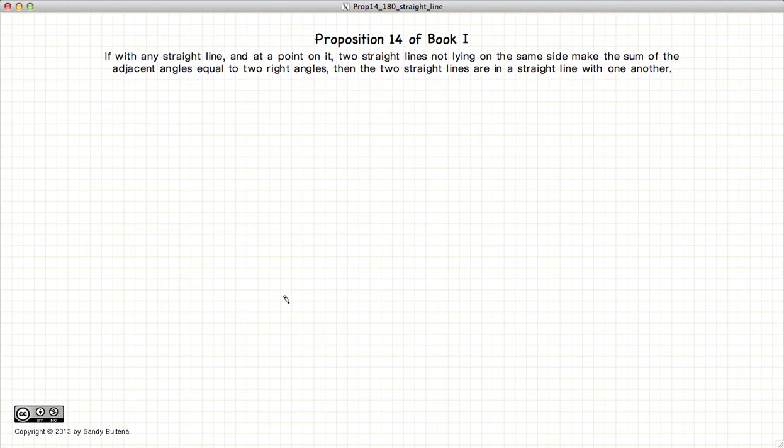which basically states that if you have a straight line, a point on this straight line, and another two lines extending from that point, not on the same side of the first line,